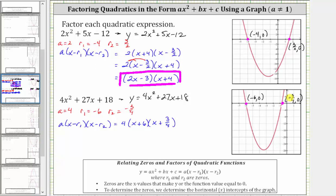Again, this could be considered factored form, but normally we don't leave fractions in the binomial factors. To clear the fractions from this binomial, we distribute the four into the quantity x plus three fourths. Let's first change the order and write this as four times the quantity x plus three fourths times the quantity x plus six. Now we'll distribute the four: four times x is 4x, plus four times three fourths, which gives us 12 fourths or three. Then we have times the quantity x plus six. This is the factored form of the given quadratic expression.